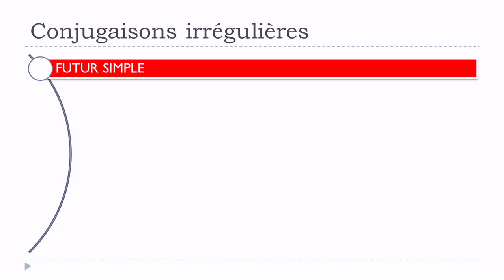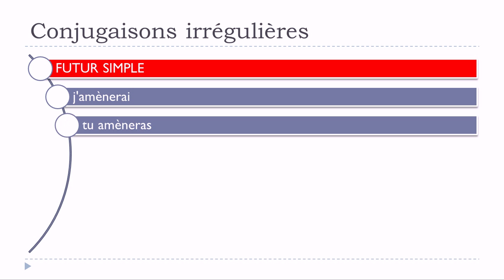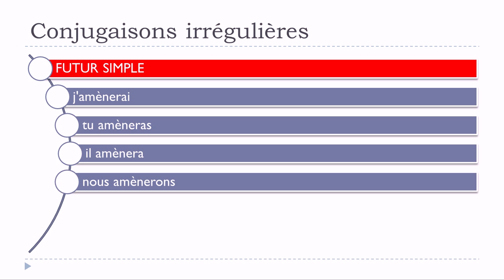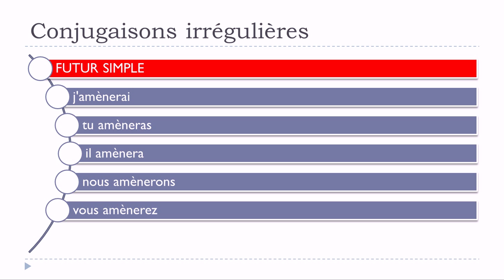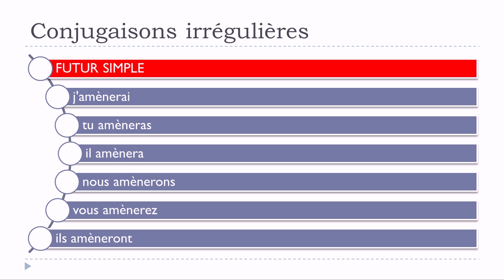Let's see now the futur simple. J'amènerai, tu amèneras, il amènera, nous amènerons, vous amènerez, ils amèneront. We can see here that all the forms are concerned and all the forms are modified. The modification is exactly the same as before — just the accent grave placed on top of this E.